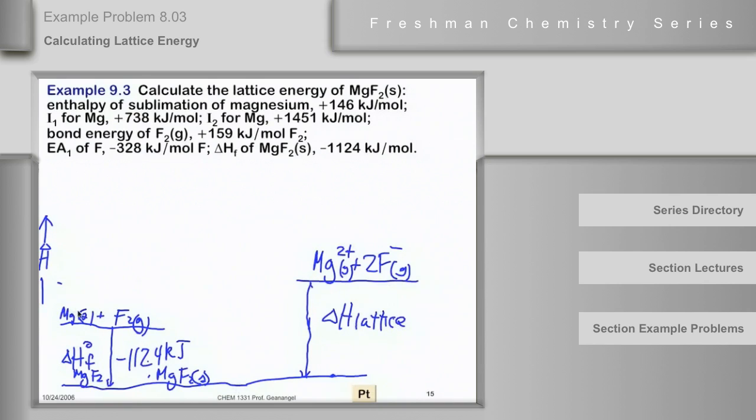So now I have to get from magnesium solid to magnesium two plus in the gas phase. So the first thing I can do is sublime the magnesium, magnesium now in the gas phase, plus F2 in the gas phase, and this arrow is delta H of sublimation of magnesium, which is given up here at plus 146 kilojoules per mole. Okay, so I've got my magnesium in the gas phase.